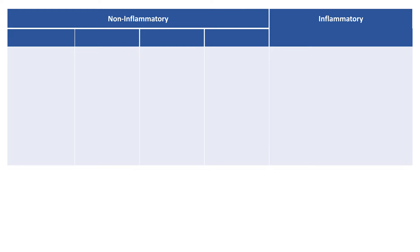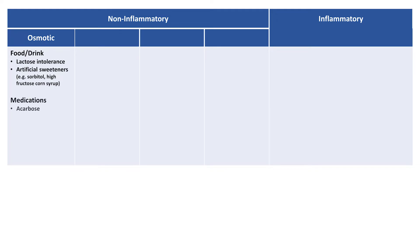Under the broad heading of non-inflammatory diarrhea, we have multiple subcategories. First is osmotic diarrhea, in which the problem is the presence of a non-absorbable osmotically active substance in the colon. This presents with a modest volume of diarrhea typically associated with the ingestion of specific foods or medications. It includes lactose intolerance, artificial sweeteners such as sorbitol and high-fructose corn syrup, medications such as acarbose, magnesium hydroxide, and lactulose, and laxative abuse — as might occur in an eating disorder or factitious disorder, in which case it is known as factitious diarrhea.